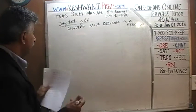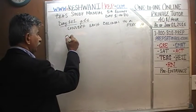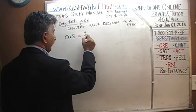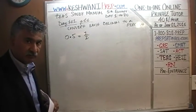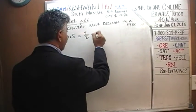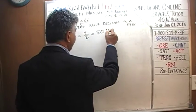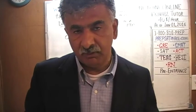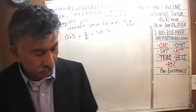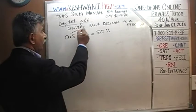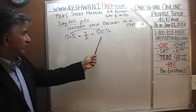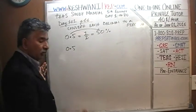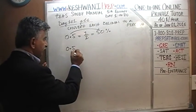For example, everyone knows that 0.5 — in fraction form — is half. And we also know that half of something is 50 percent. The question is: how do we go from this decimal form to percentage form? Here we have the decimal form 0.5, and we need to get to 50 percent.